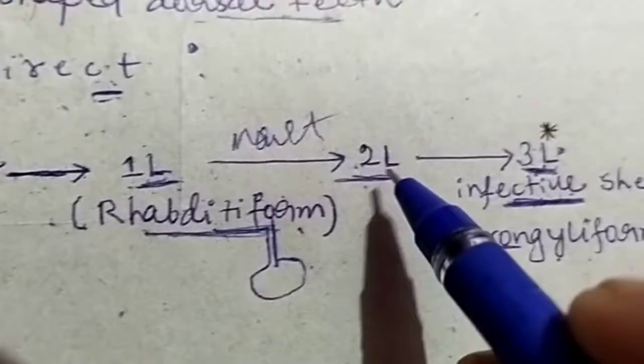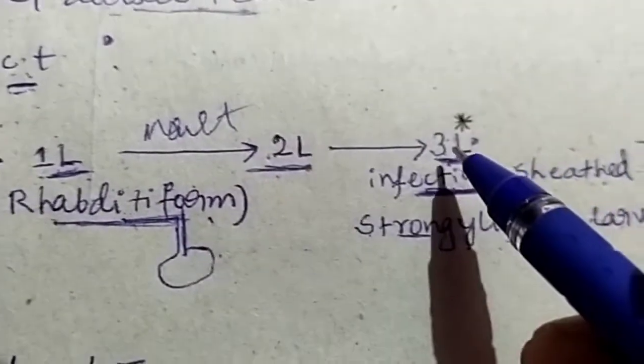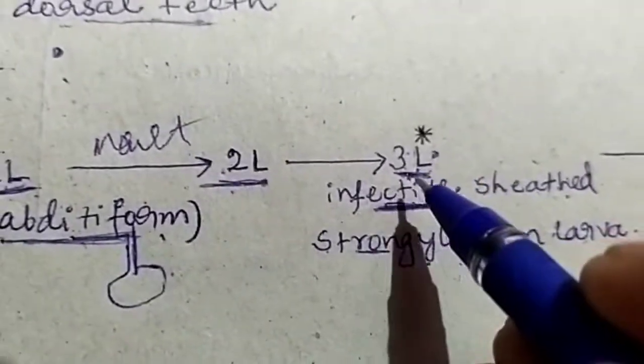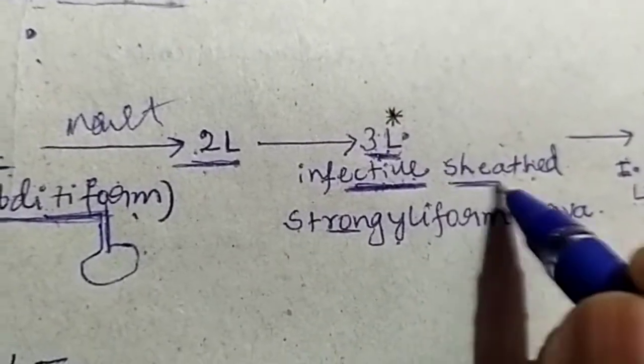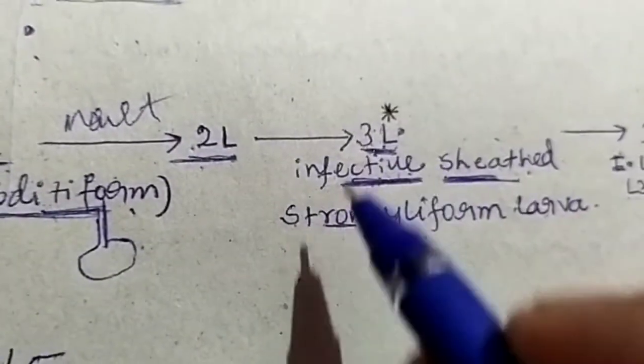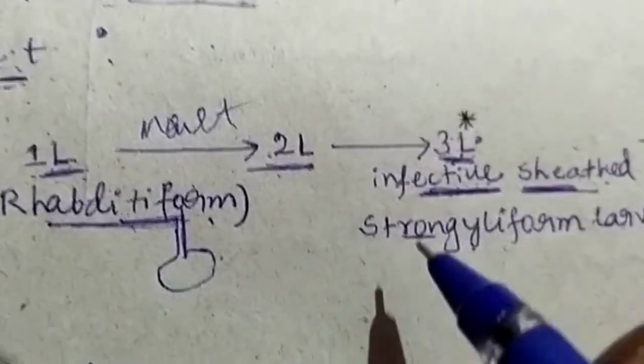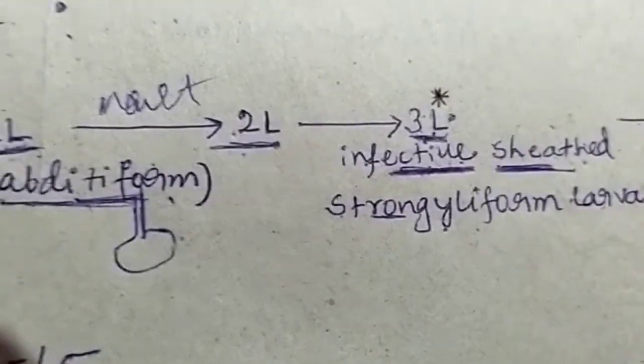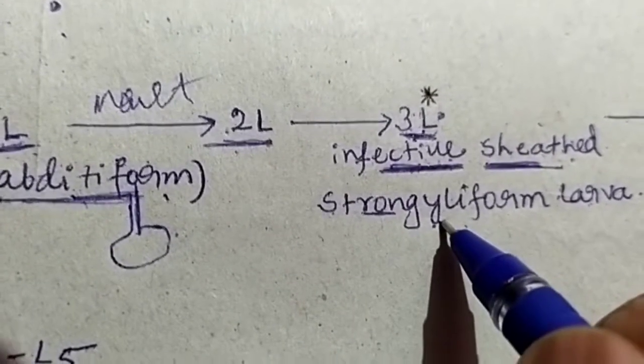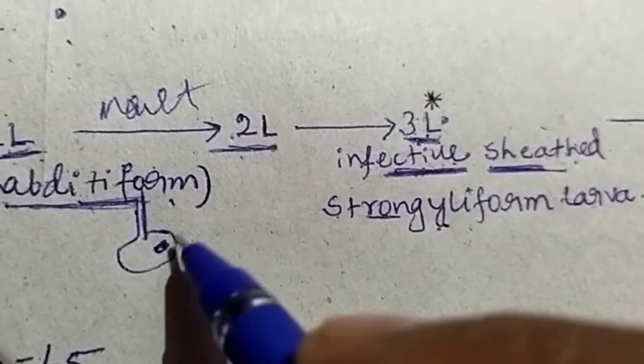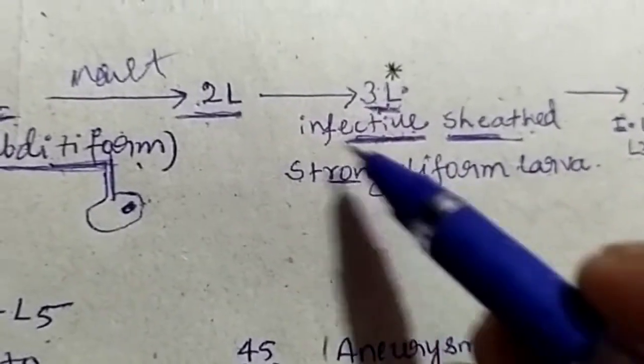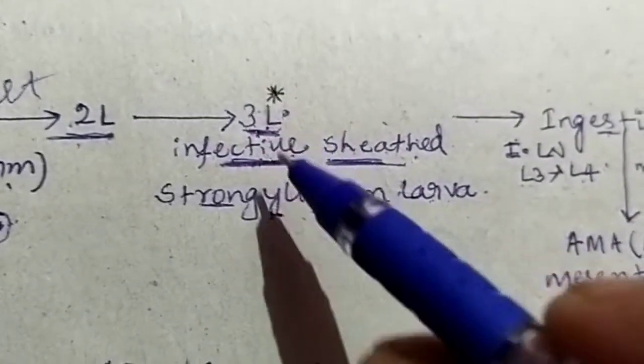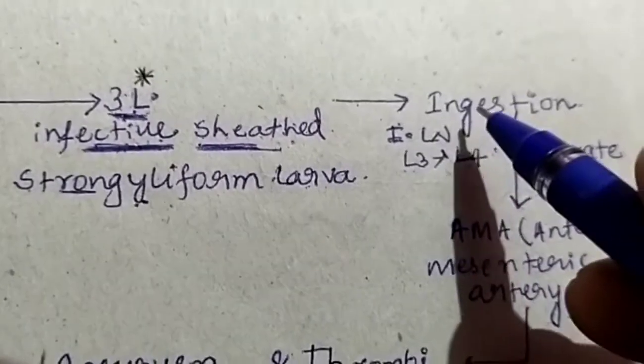These molt to form L2 larvae. L2 molt to form L3 larvae. The L3 stage is infective in Strongylus and is covered by a protective sheath. These are called filariform larvae or strongyliform larvae. These do not possess a bulb-shaped structure at the posterior end of the esophagus. These infective larvae will enter the host while grazing.